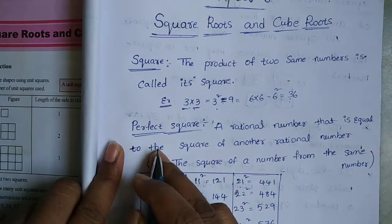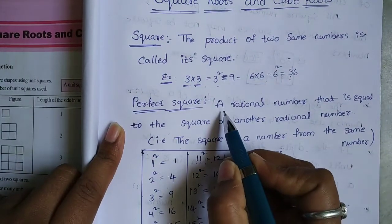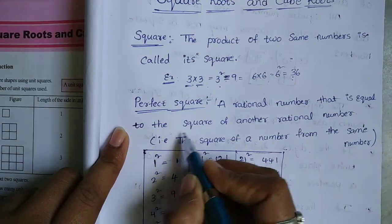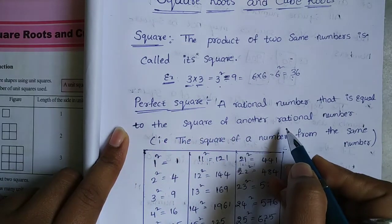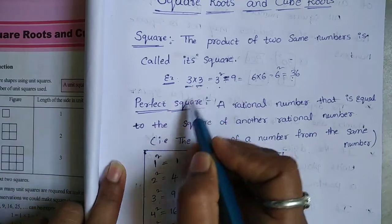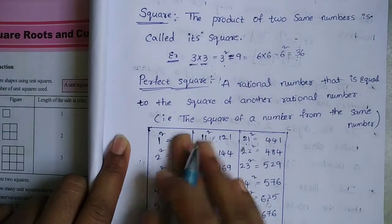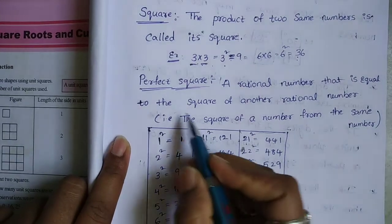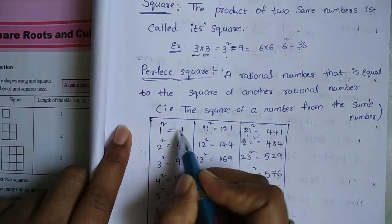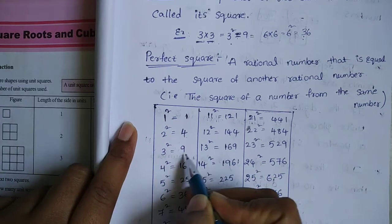Here, perfect square: a rational number that is equal to the square of another rational number. Product of two same numbers. 1 squared means 1, 2 squared means 4, 3 squared means 9.